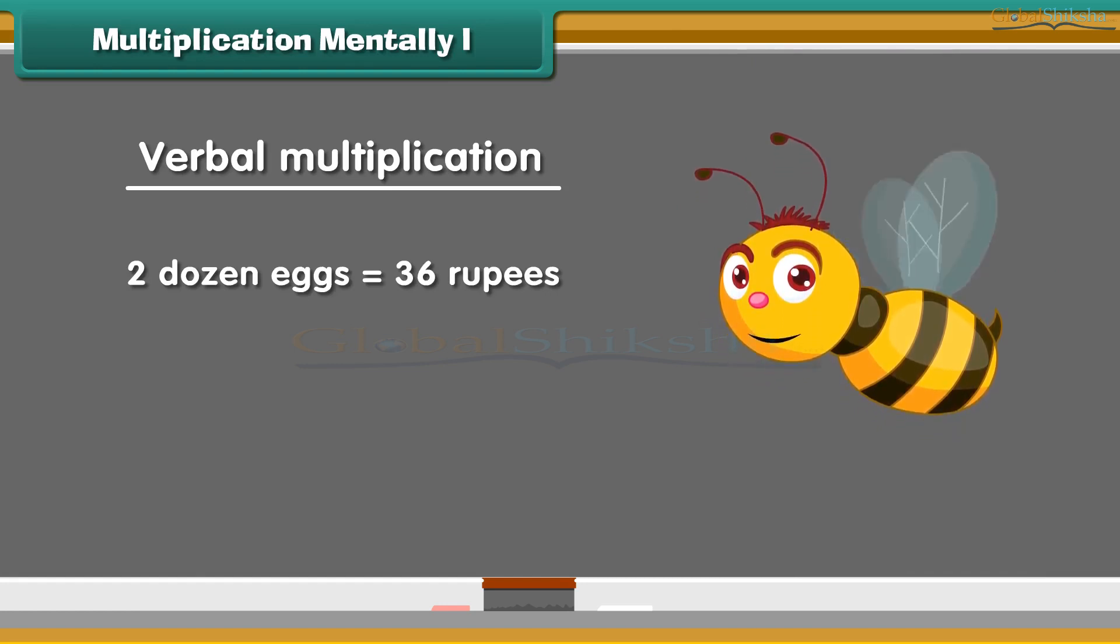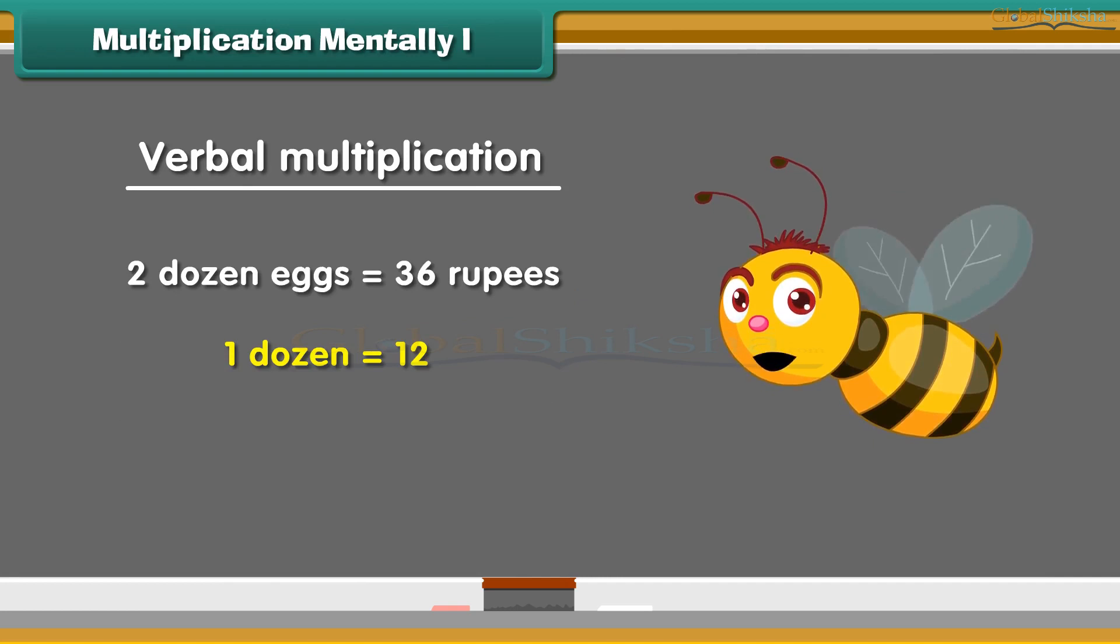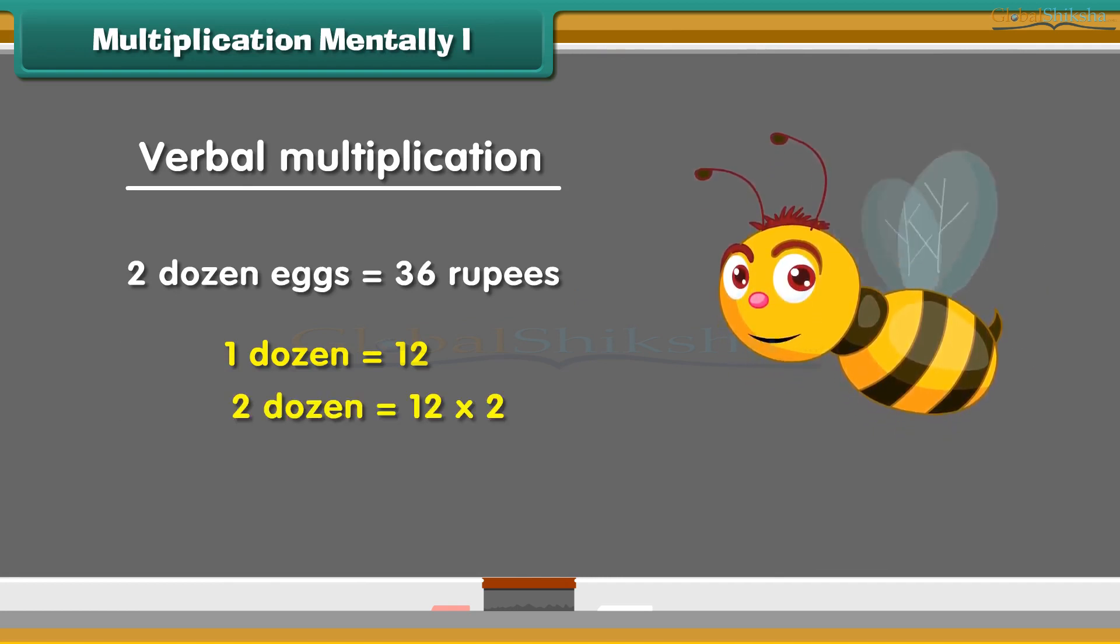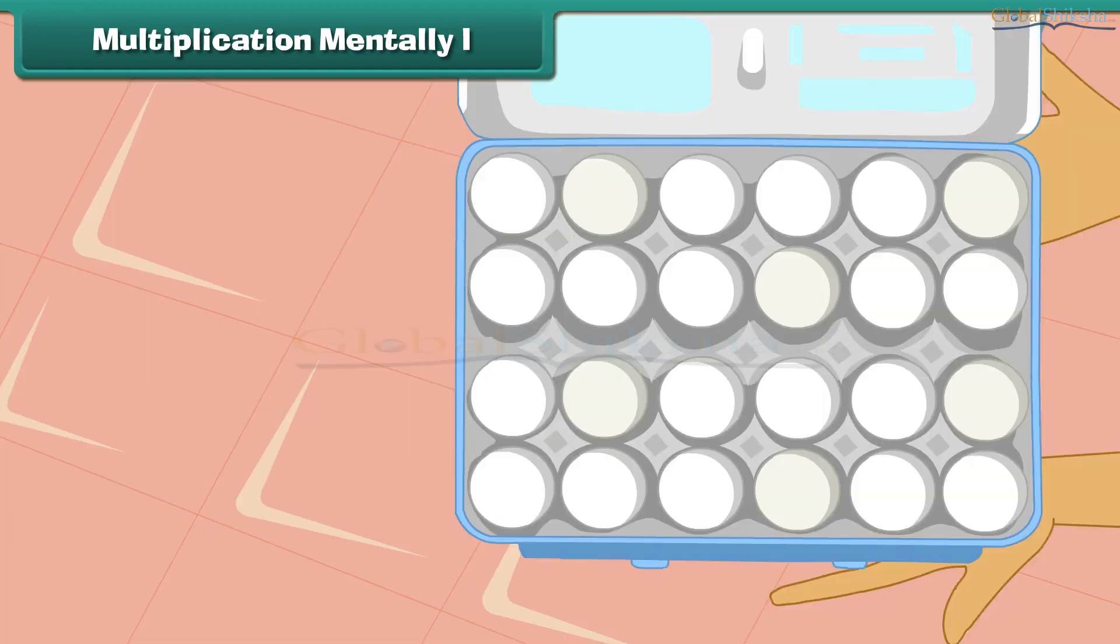Jennifer buys 2 dozens of eggs for 36 rupees. How many eggs did she buy? We know 1 dozen equals 12. Therefore, 2 dozen will be equal to 24. Thus, Jennifer bought 24 eggs for 36 rupees.